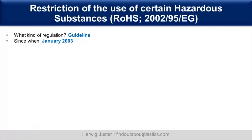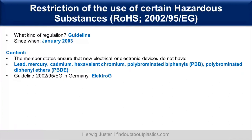The next one is the Restriction of the Use of Certain Hazardous Substances, the RoHS, also called 2002/95/EC — a guideline established in 2003. Its content requires that member states ensure new electrical or electronic devices do not contain certain heavy metals such as lead, mercury, cadmium, or polybrominated compounds including PBB or PBDE. In Germany, the 2002/95/EC is implemented as the ElektroG.